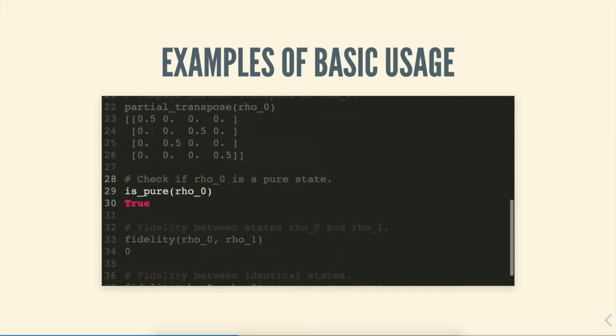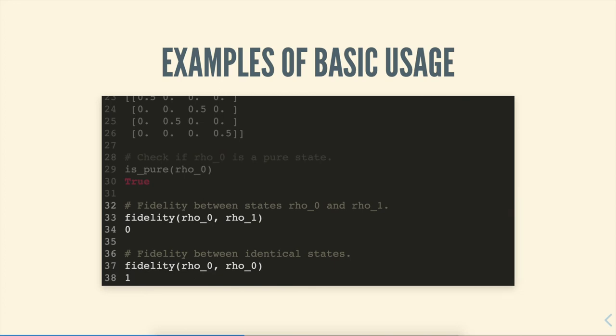We can also check properties of states, whether or not a state is entangled or pure or separable. What we're doing here is we're checking whether or not the matrix, which again is represented by this rho 0 state, is pure or not. And we're getting the boolean value true to indicate that it is indeed pure.